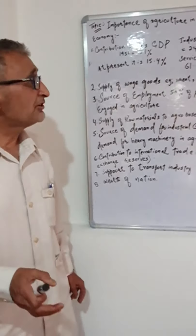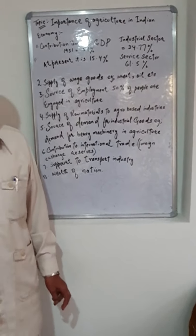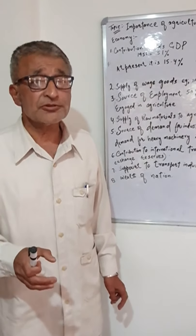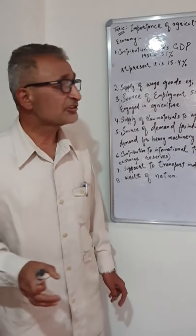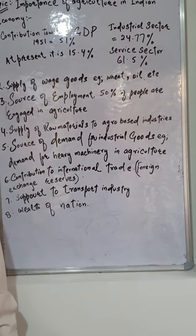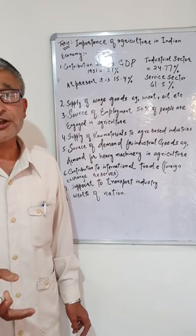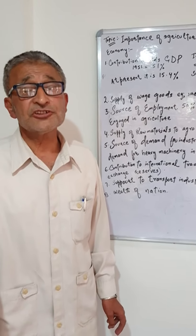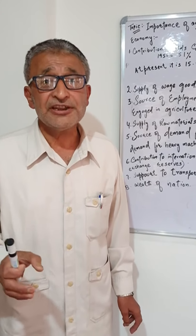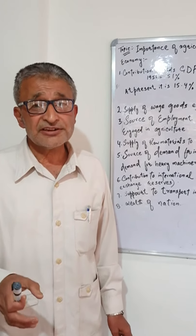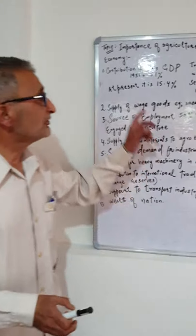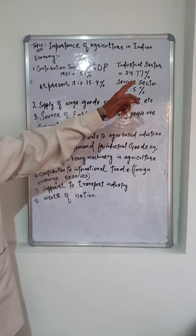The share of the industrial sector in GDP is increasing — currently at 24.77% — and the service sector share is 61.5%. This shows the declining trend in agriculture, as people are moving towards other occupations and towards the service sector. Additionally, agriculture land is diminishing day by day as colonies and industries are being established. So agriculture still contributes towards GDP, though its share is shrinking.